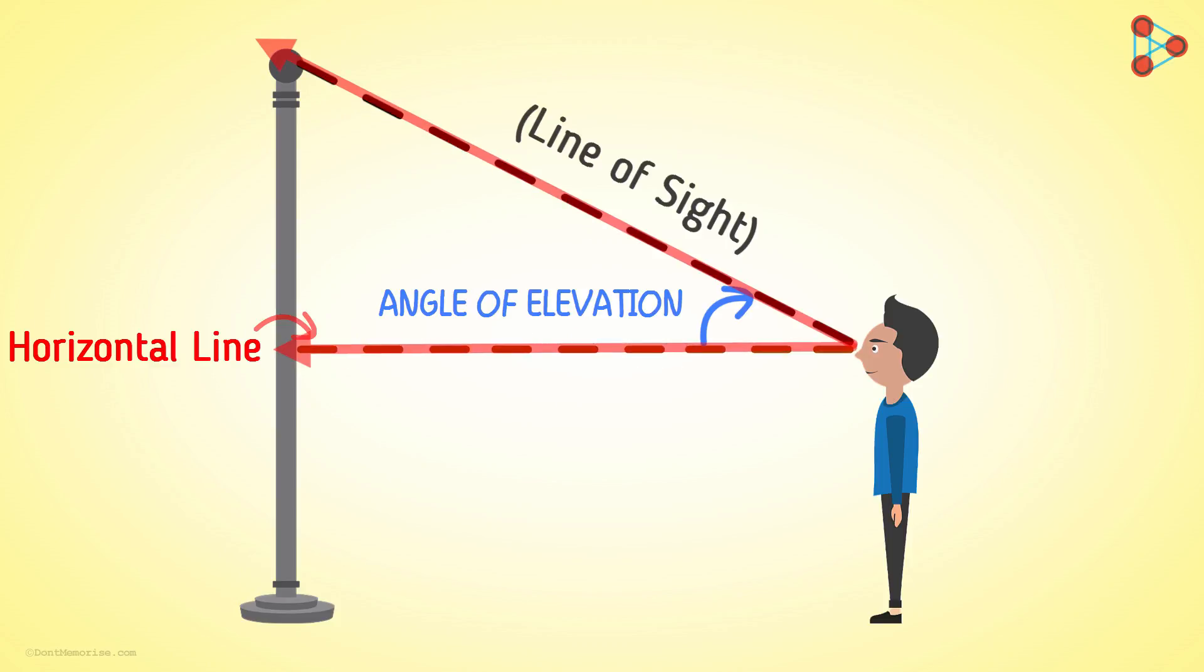Let me repeat this quickly as it is an important concept. When a person is looking up, the angle formed by this line of sight with the horizontal line is called the angle of elevation. Note here that the line of sight is above the horizontal line.